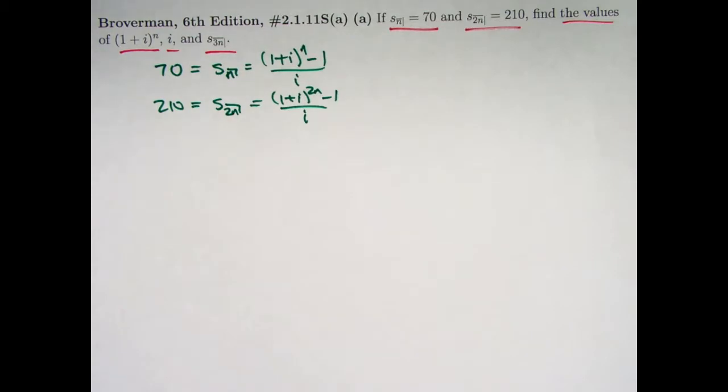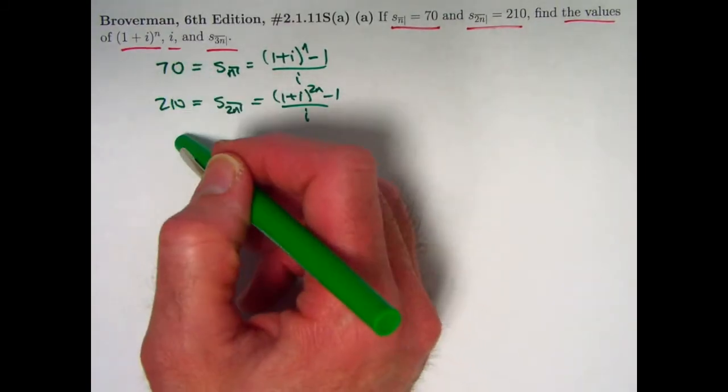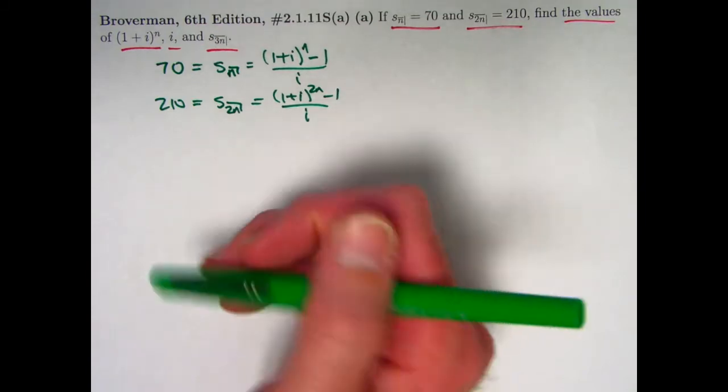Our first goal is to solve for (1+i)^n. It may not be clear what to do. One little hint that is helpful is notice that 70 goes evenly into 210. 210 divided by 70 is 3. Maybe we should divide one equation by the other.